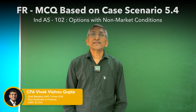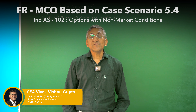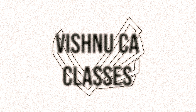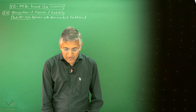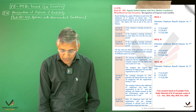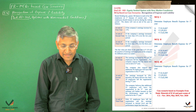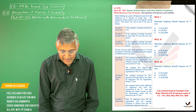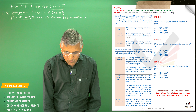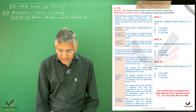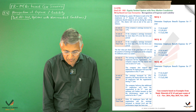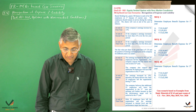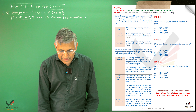Hello students, we are continuing MCV based on a case scenario. This case scenario is based on recognition of expense and liability, covering IFRS 2 with non-market conditions. Beetle Hotel Incorporation grants 100 shares to each of its 300 employees on 1st January. Employees must remain in service during the vesting period. Shares vest at the end of Year 1 if company earnings increase by 30%, at the end of Year 2 if earnings increase by more than 21% over two years, and at the end of Year 3 if earnings increase by more than 23% over three years.